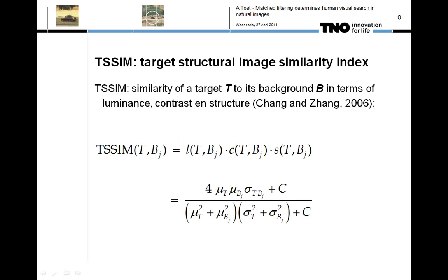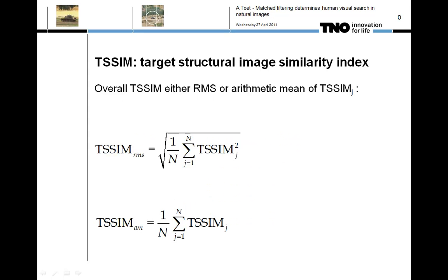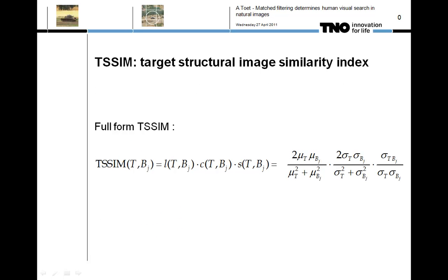The size of the target block is about twice the size of the target, to ensure that the patch represents both the target and its local background. After substitution, the target structural similarity index can be written as follows. Here we set C equal to zero, since we observe no instabilities for the image set used in our experiments. The overall target structural similarity index can then be calculated as either the root mean square or the arithmetic mean of the local target structural similarity index. To assess the individual contributions of luminance, contrast, and structural similarity to the overall metric, we rewrite the target structural similarity index in its full form.